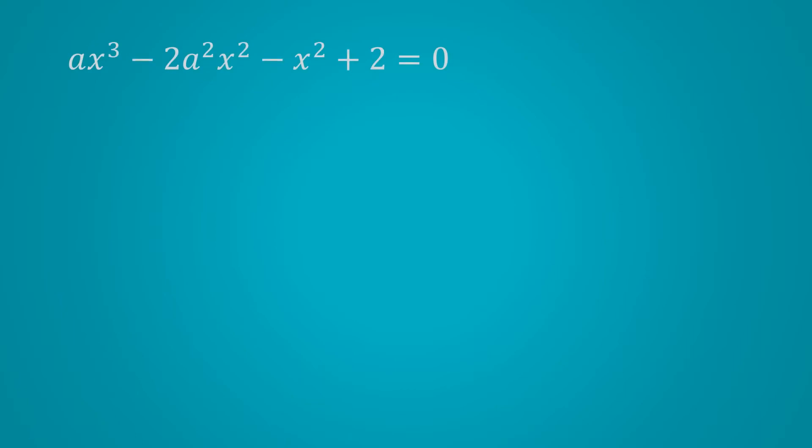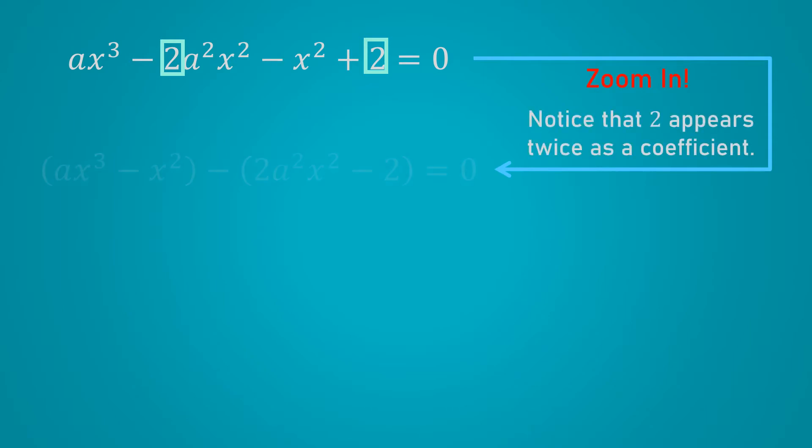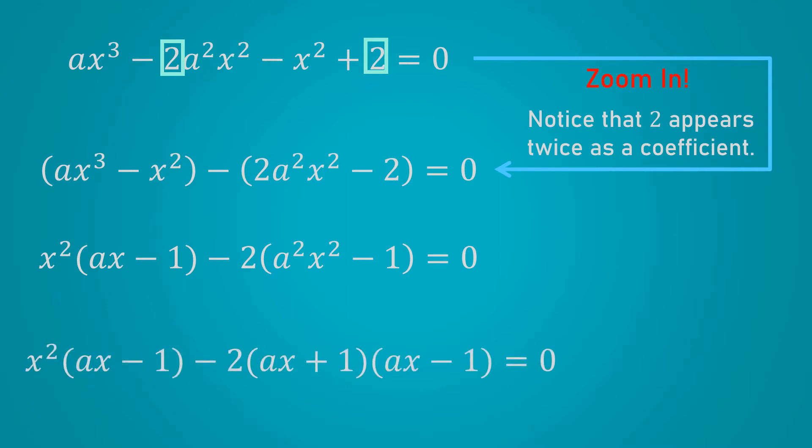Remember that we're trying to solve for x. And since we have a cubic in x, we probably hope to find some sort of a factorization. Here's a tip regarding factorization. Zoom in to the numerical coefficients first. Here, we see 2 appearing twice. And so that means that it is probably a good idea to group the terms using that observation. If we pull out the common factor from each of these, we get ax minus 1 and a squared x squared minus 1. And we notice that using a difference of squares factorization, a squared x squared minus 1 can further be factored into ax plus 1 and ax minus 1. So therefore, ax minus 1 is a common factor across the entire equation.